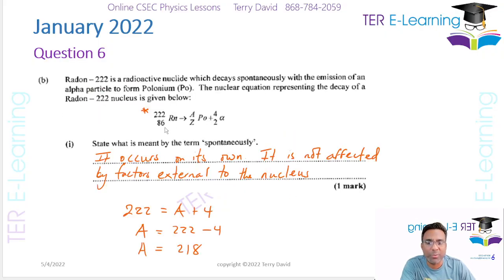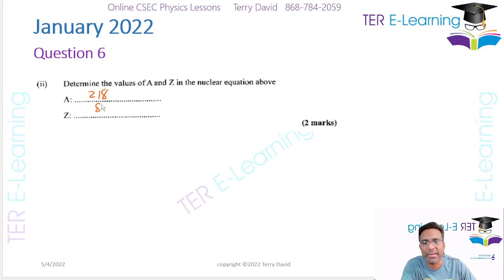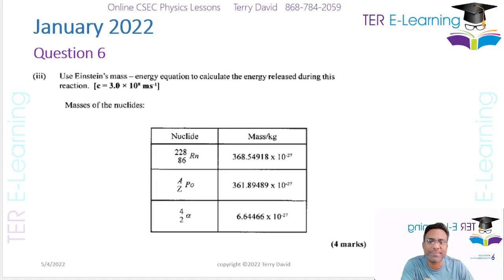The next part you want to figure out what is Z. So your total atomic number on the left side which is 86 is equal to Z plus two. So therefore Z is equal to 86 minus two, which is equal to 84. So that is what this is equal to here.